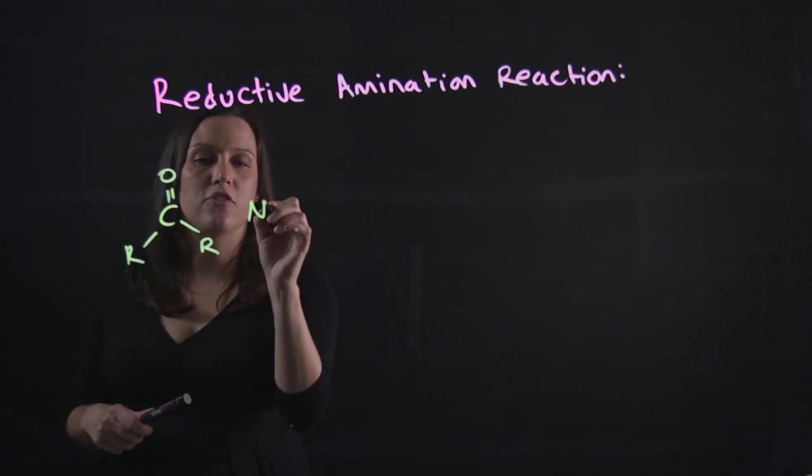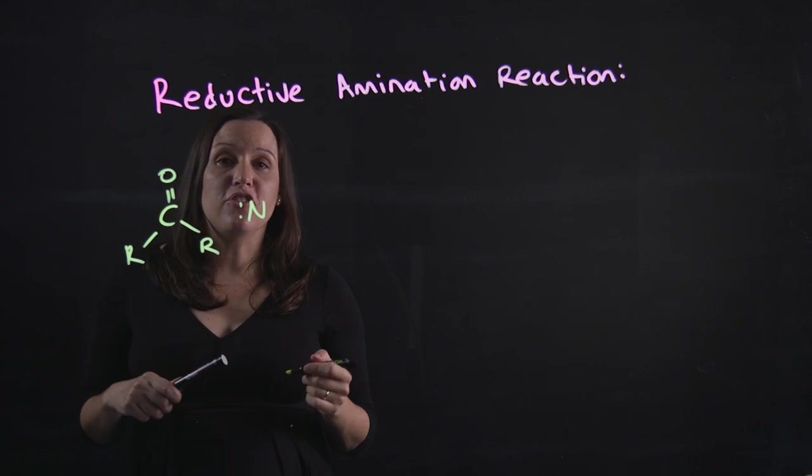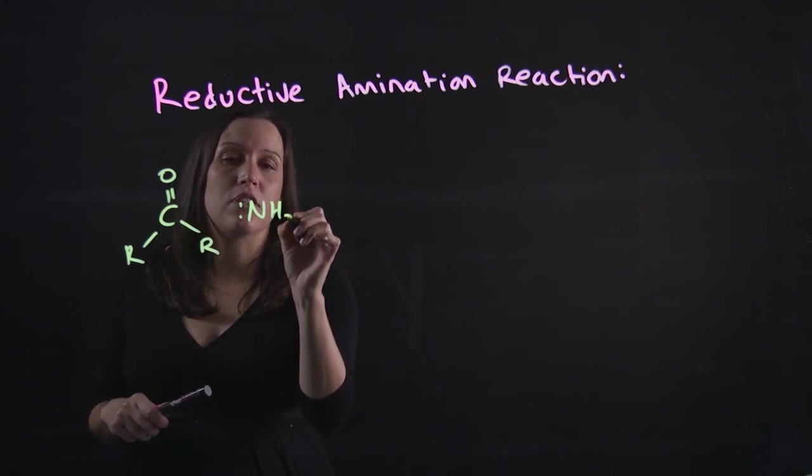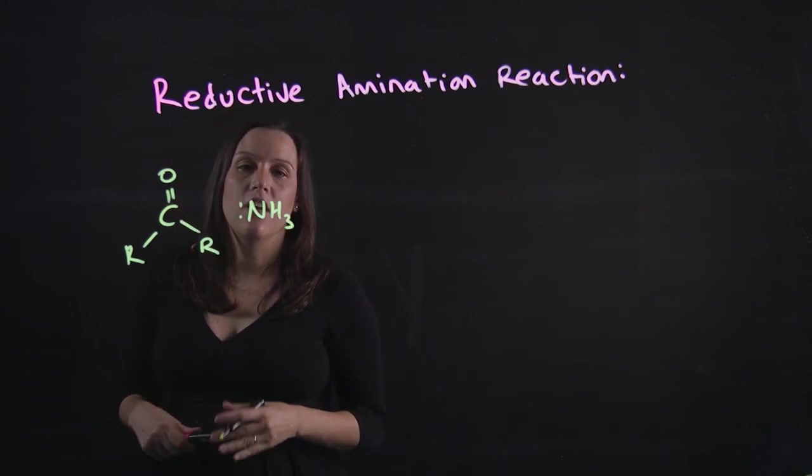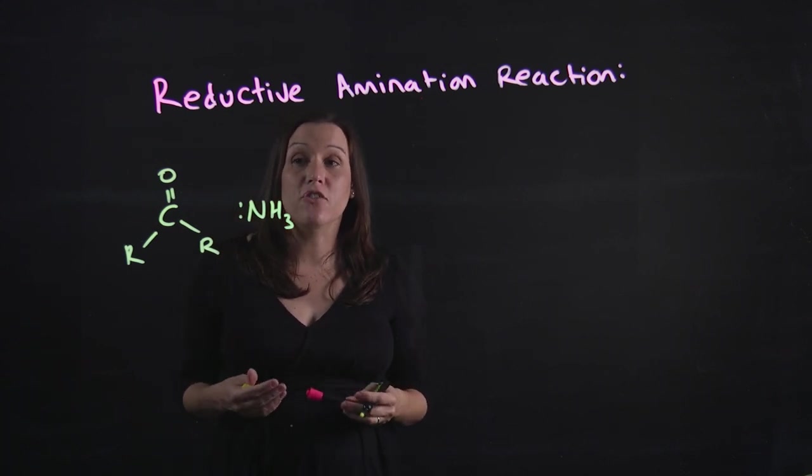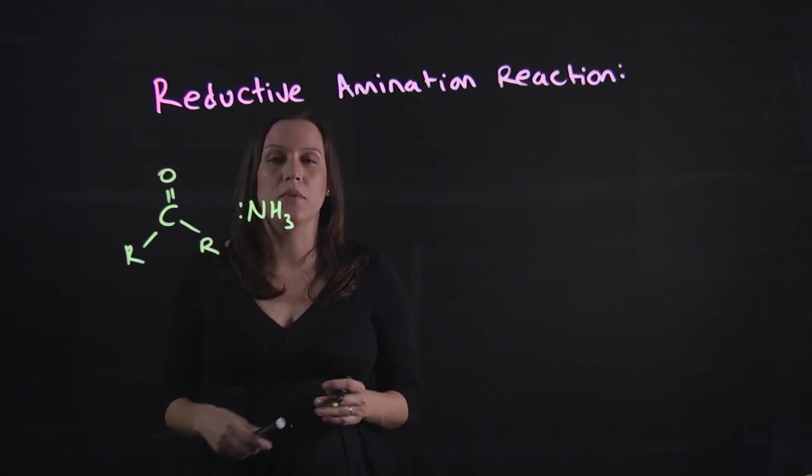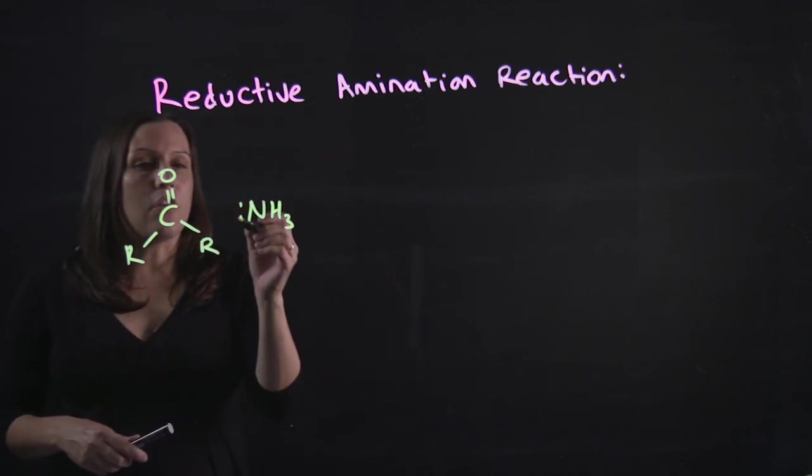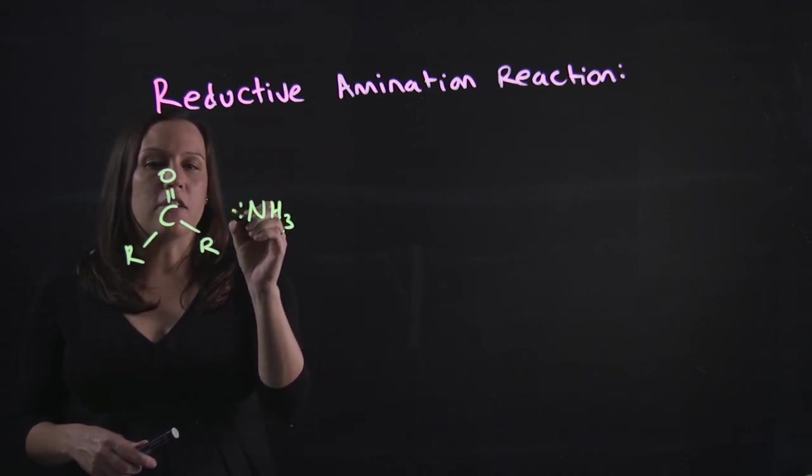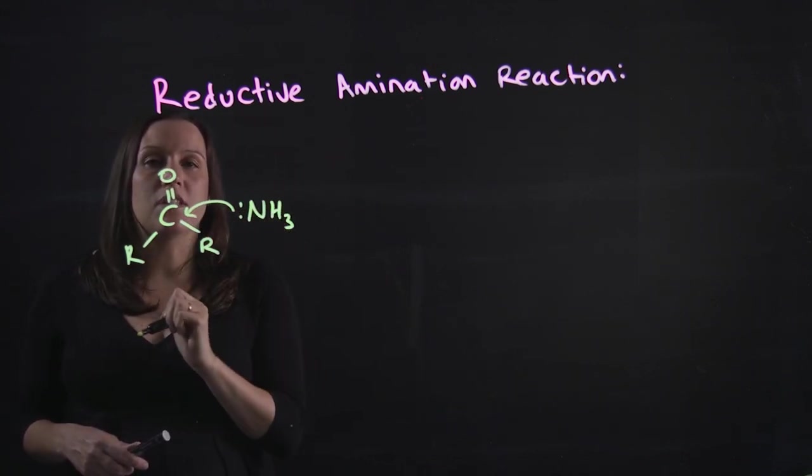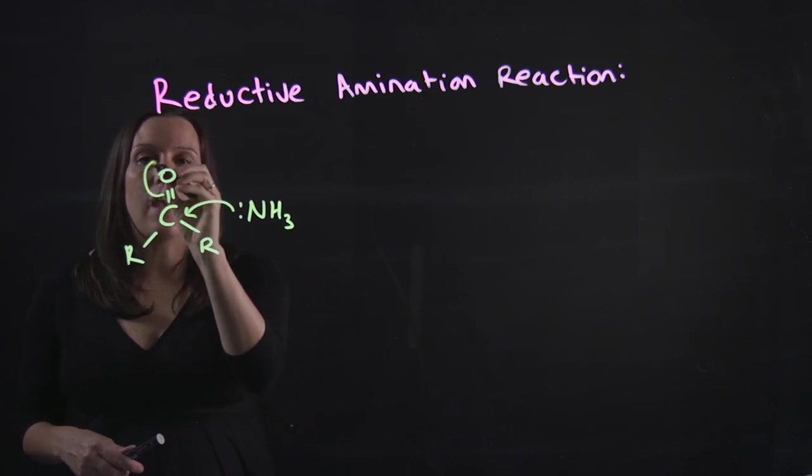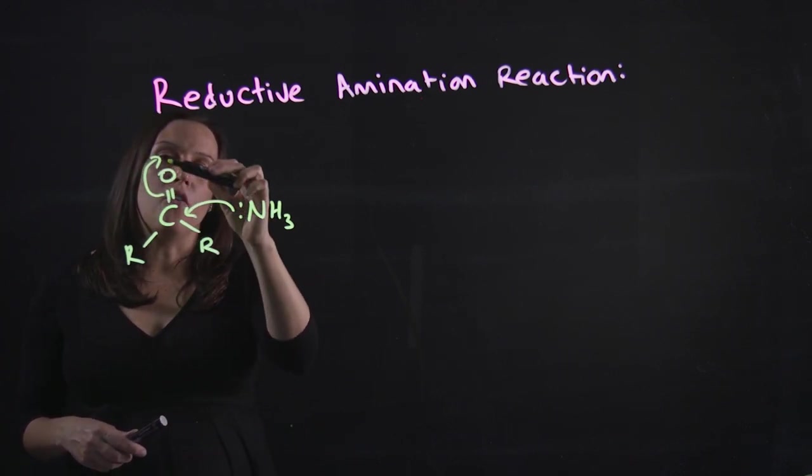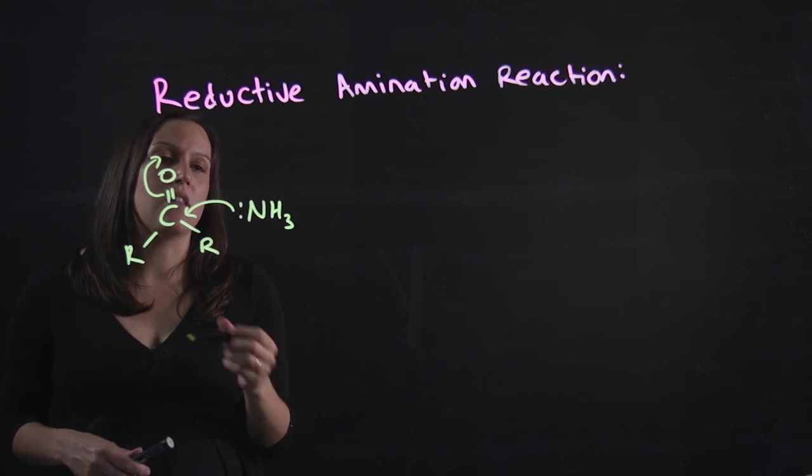And we have a nitrogen group coming in. That nitrogen can have R groups attached or it can just have hydrogens attached. I'll just draw it as an NH3 that's going to be adding on to this carbonyl carbon. Our lone pair from our nitrogen attacks our delta positive carbon and then we have an opening of that double bond there to let that in.